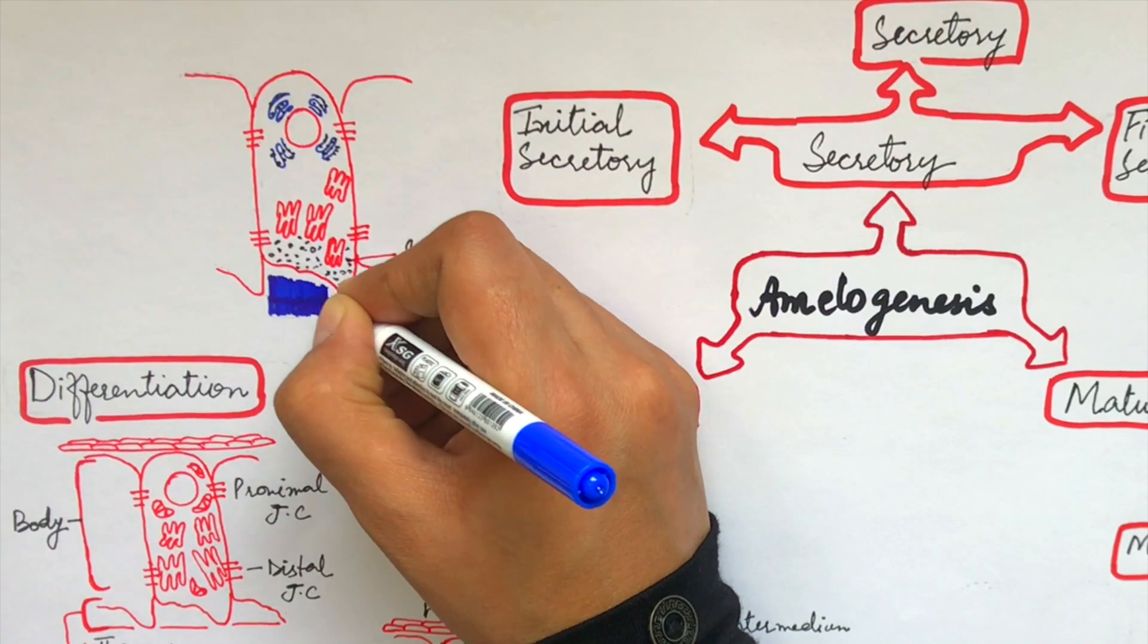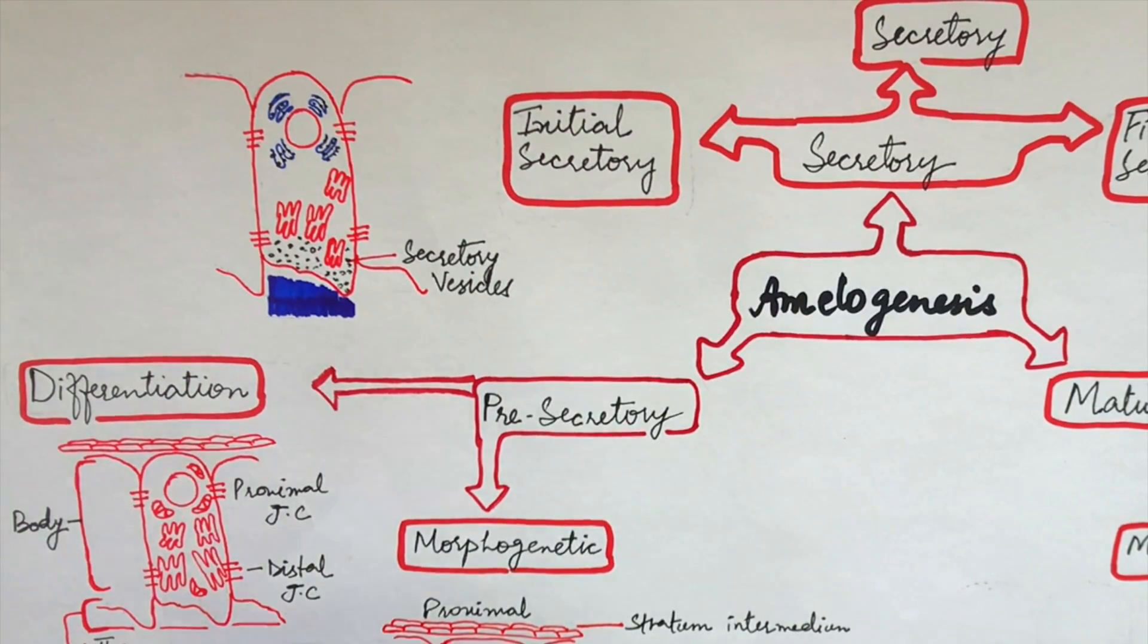And this is the reason that the first layer of enamel released at this phase would be structureless or will have no rod and inter-rod enamel in it, because the rod and inter-rod enamel matrix will be released from the well-developed Tomes' process only.